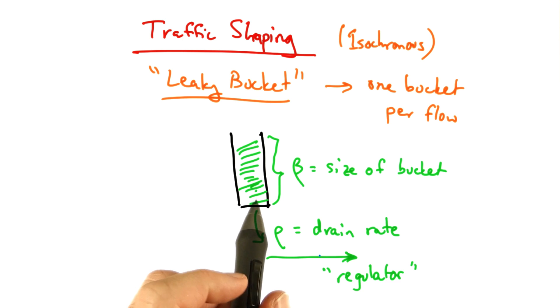In a leaky bucket traffic shaper, data arrives in a bucket of size beta and drains from the bucket at rate rho.